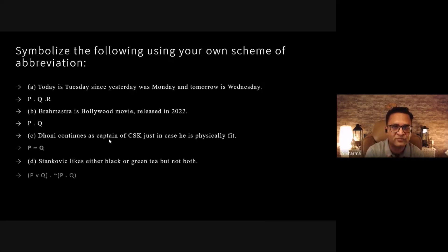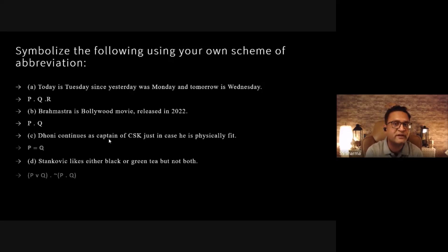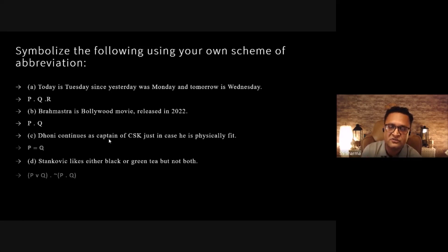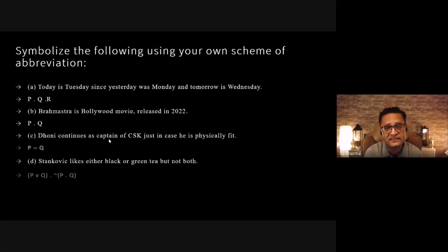'Brahmastra is a Bollywood movie released in 2022' is not a simple proposition — it is a compound conjunction of two propositions: p = 'Brahmastra is a Bollywood movie' and q = 'Brahmastra was released in 2022.' Symbolizing it as just p is a problem because it must be broken down into simple propositions. The correct symbolization is p·q.